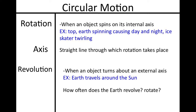The Earth is a larger example which spins on its axis, causing day and night for us. And an ice skater twirling is also an example of rotation. An axis is that straight line through which the rotation takes place.